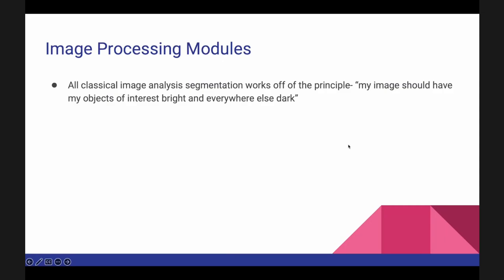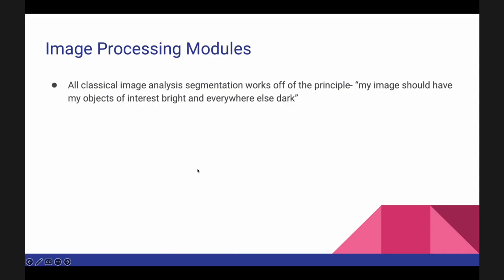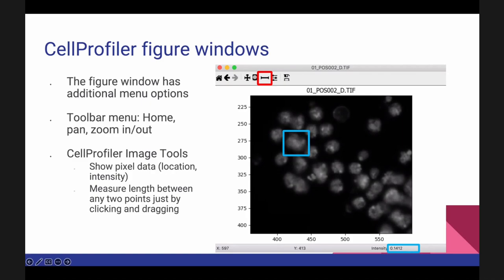CellProfiler uses what's called conventional computer vision — algorithms developed over the last 50-plus years for how computers can learn to see images. Classical computer vision works on the principle that your image is bright where you want your objects to be and dark everywhere else. You can see that's true for fruit fly cells: the background is dark and the things we care about are bright circles. Not all images look like this, but for segmentation — finding where objects are and labeling each one — anything you can do to make your image fit that model is permitted.